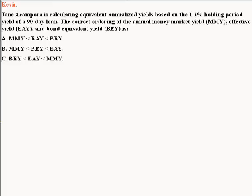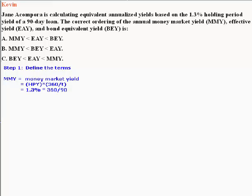I think the best way to approach this is to start by defining them. Let's start with the Annual Money Market Yield, MMY. Since the Money Market Yield does not involve any compounding and is based on a 360-day year, the equation simply becomes the holding period yield multiplied by 360 divided by the number of days, T. That is 1.3% multiplied by 360 over 90.